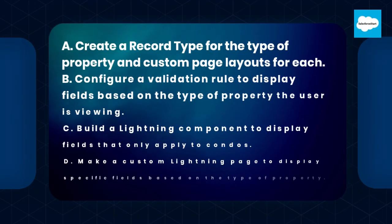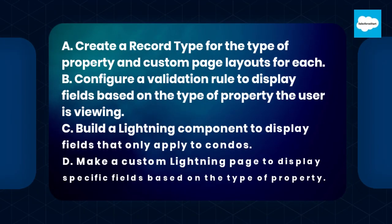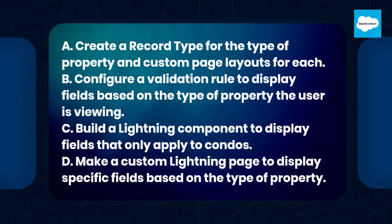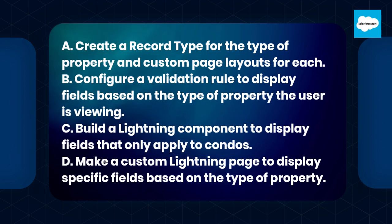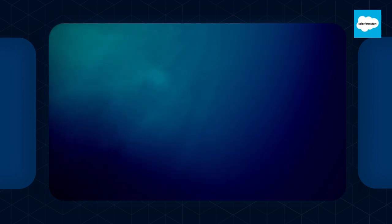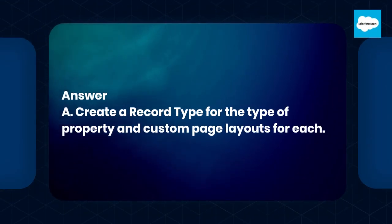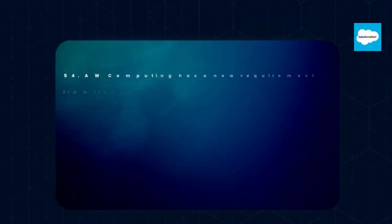A. Create a record type for the type of property and custom page layouts for each. B. Configure a validation rule to display fields based on the type of property the user is viewing. C. Build a Lightning component to display fields that only apply to condos. D. Make a custom Lightning page to display specific fields based on the type of property. Answer: A. Create a record type for the type of property and custom page layouts for each.